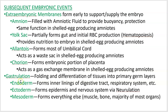Ectoderm — endo means inside, ecto means outside — forms something on the outside: your epidermis. But strangely, your nervous system too. The nervous system forms through a folding process. The process of forming that tube is called neurulation. So your brain, your spinal cord, and all your nerves derive from ectoderm.